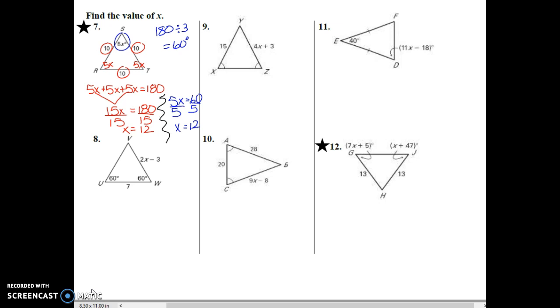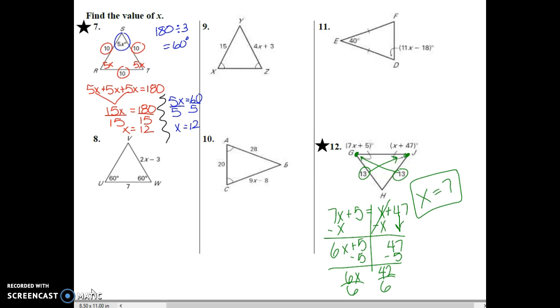If we move over to question number 12, we notice that we have two equal sides. That means the two angles that are opposite those sides have to also be equal. So in this case, we take the 7x plus 5 and set it equal to the x plus 47. Solving the equation, we have a variable on both sides. We're going to move the x to the left. So we have 6x plus 5 is equal to 47. Then we bring the 5 down. 6x is equal to 42. Divide that by 6. And we get x equal 7.